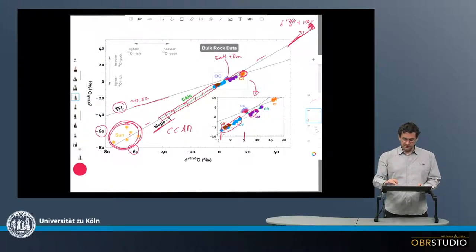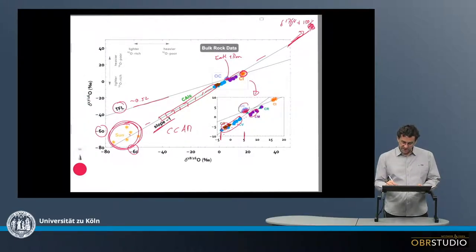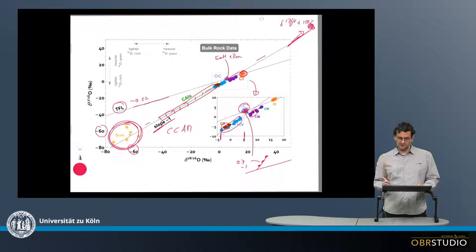Finally, there is the ordinary chondrites, which are up here. If we would look here, and this would be the terrestrial fractionation line, then the ordinary chondrites plot up here, so they are slightly off, basically off the slope 1 line, and it's also a little bit unclear. These are the three ordinary chondrite groups. What the slope of this line is might be something between 0.7 and 1, but this is not fully solved.